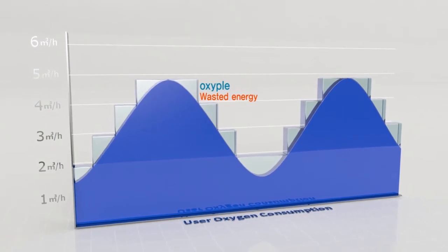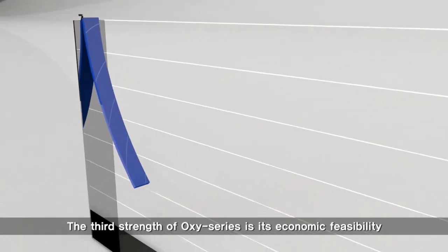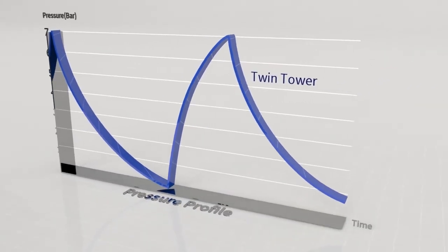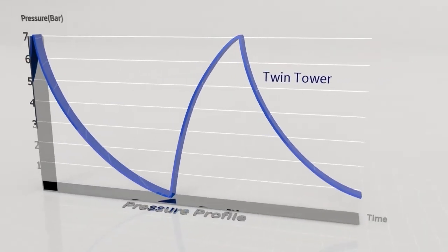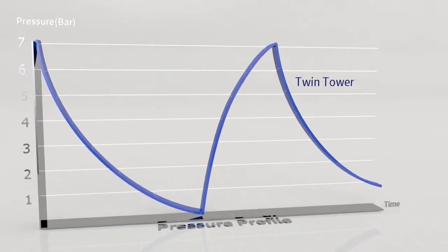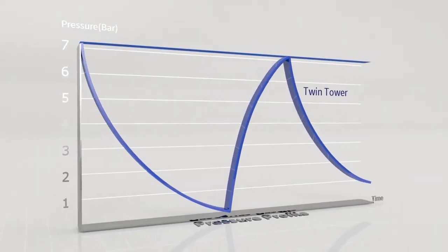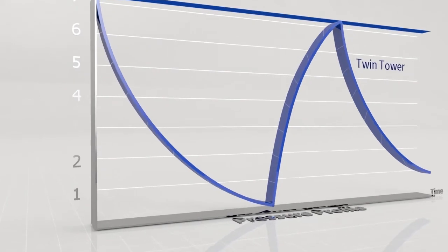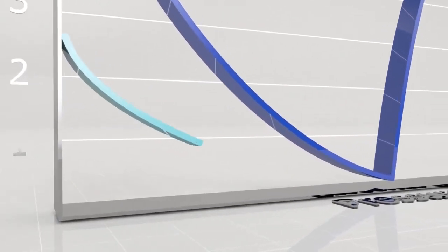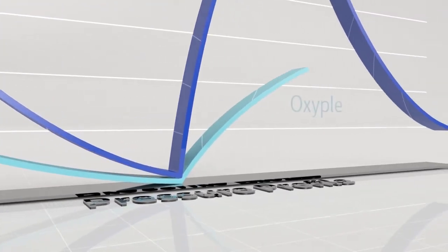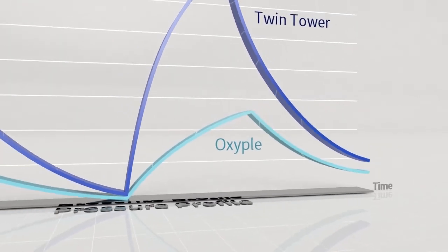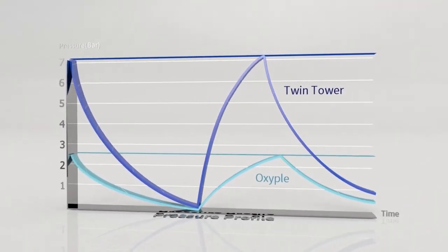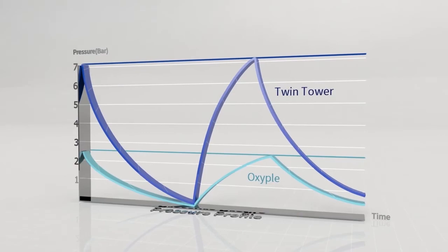The third strength of the Oxy series is its economic feasibility. Previous products using twin tower methods perform the PSA process at seven to eight bar, thus requiring compressed air over eight bar. On the other hand, the Oxypole performs the PSA process at a pressure of 2.5 bar, requiring only about three bar of compressed air.